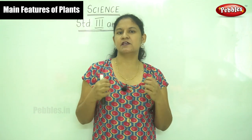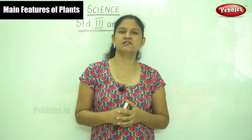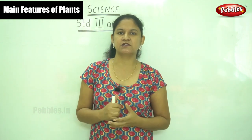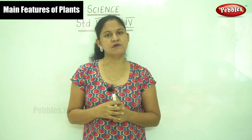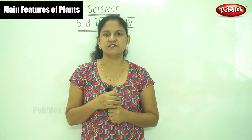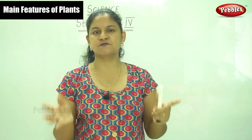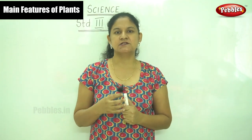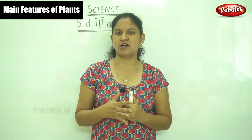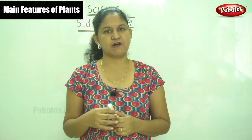The part of the plant that grows below the ground is called the root, and the part that grows above the ground is called the shoot. The root absorbs water and nutrients and transfers them to the stem, which in turn transfers them to the different parts of the plant. The shoot bears the branches, leaves, fruits, flowers, and buds.